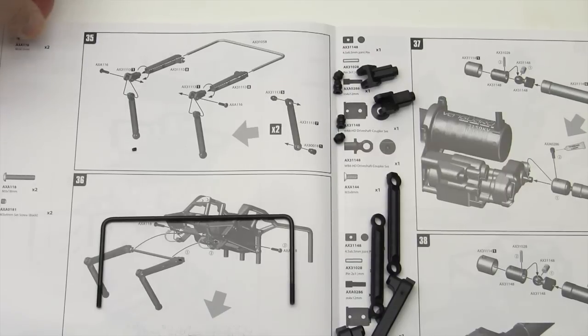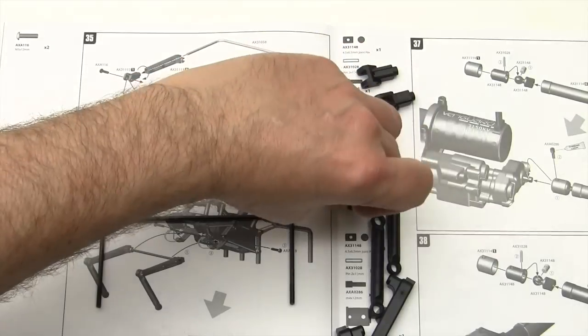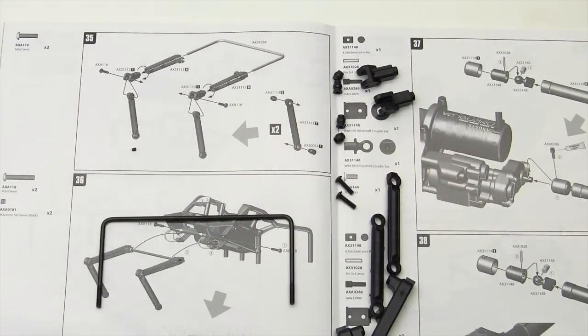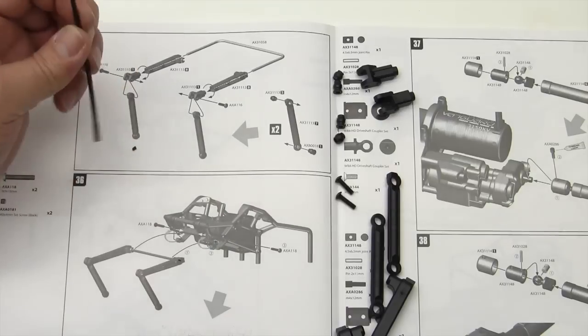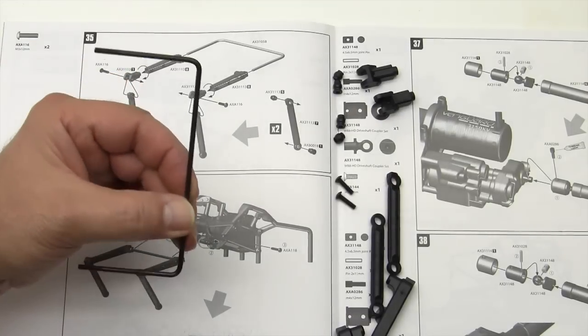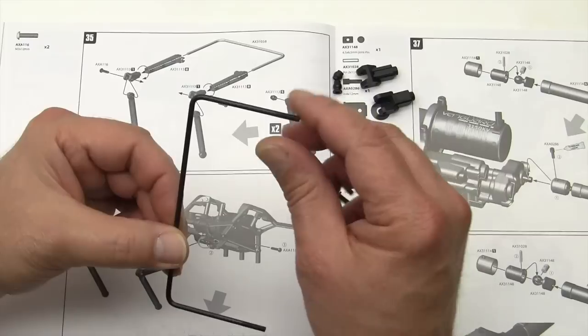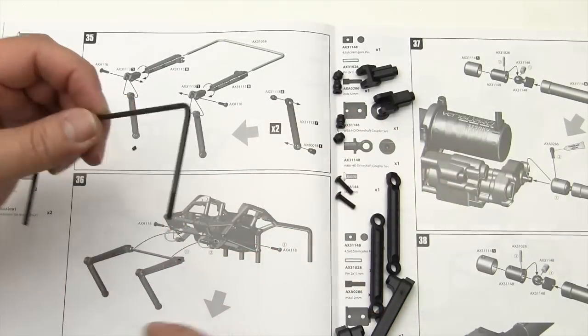Okie dokie, now on to step number 35. Forgot a couple parts here that I need to put in. Let's take a look at this. We are building the sway bars, and this is the sway bar here which was in your metals package, and they do have threads on them.